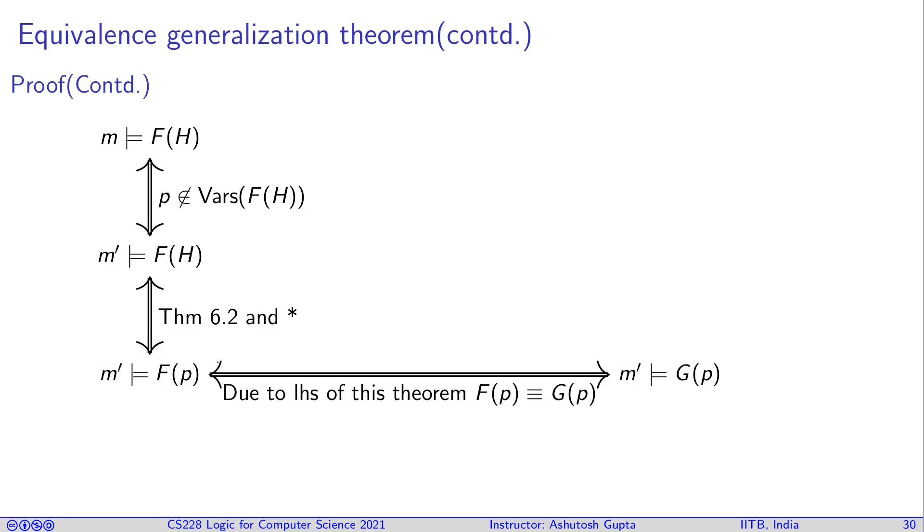The next step uses the left-hand side of what we want to prove. Assume that G(p) is equivalent to F(p). Therefore, I can say that m' now satisfies G(p). Since m' satisfies G(p), I can continue and say m' satisfies G(H), again using Theorem 6.2 and what we had proven that these two behave the same way on m'.